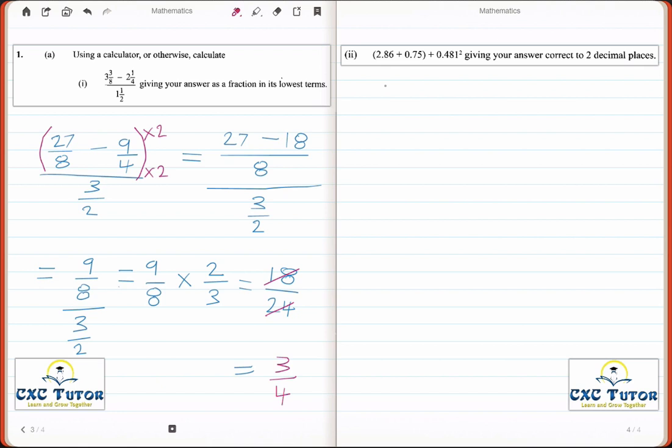Now in this next question, we are given a decimal expression which is 2.86 plus 0.75 plus 0.481 squared. I'm here to solve that expression and give our answer correct to two decimal places.